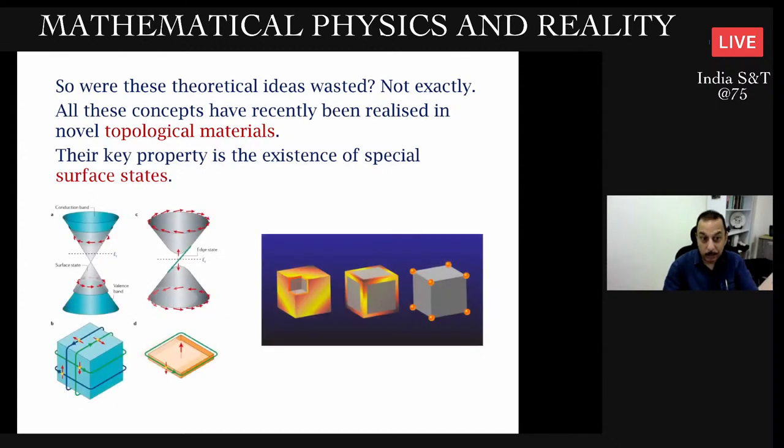However, recently, all three concepts have been realized in the last couple of decades in materials, not in vacuum, not in elementary particles, but in topological materials. These materials, as you must have heard, their key property is that the way the bulk behaves with respect to conductivity is not the way the boundary behaves. For example, this golden cube would be an insulator in the bulk, but the boundary can pass current.